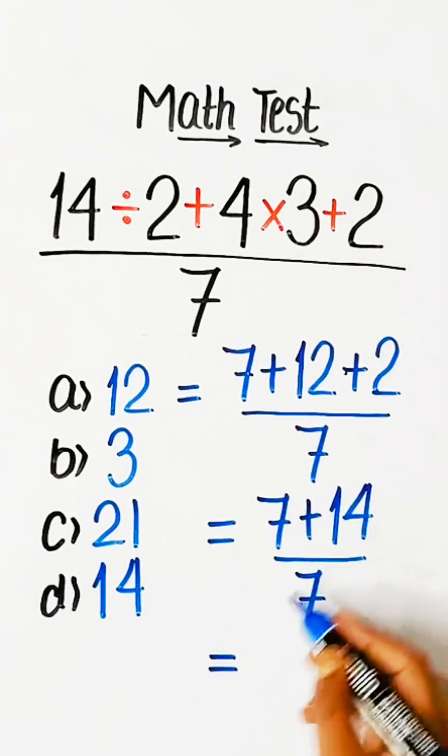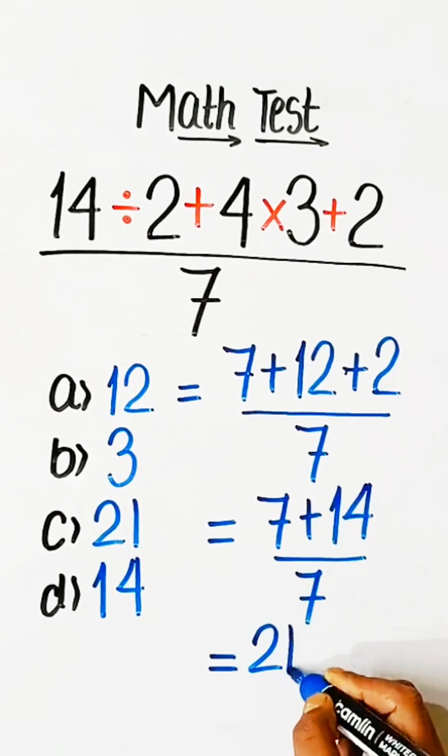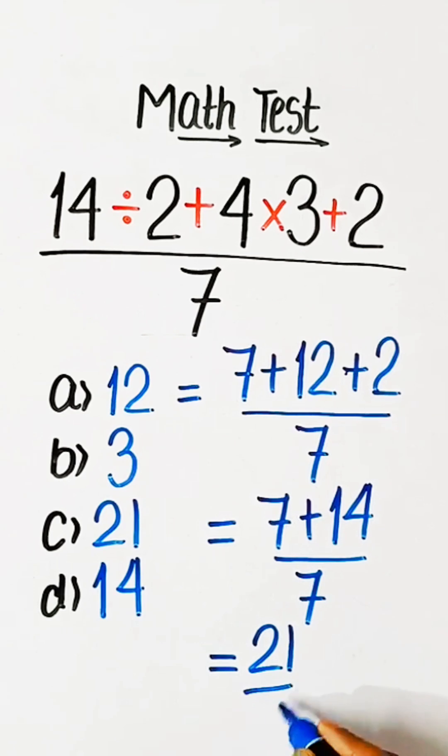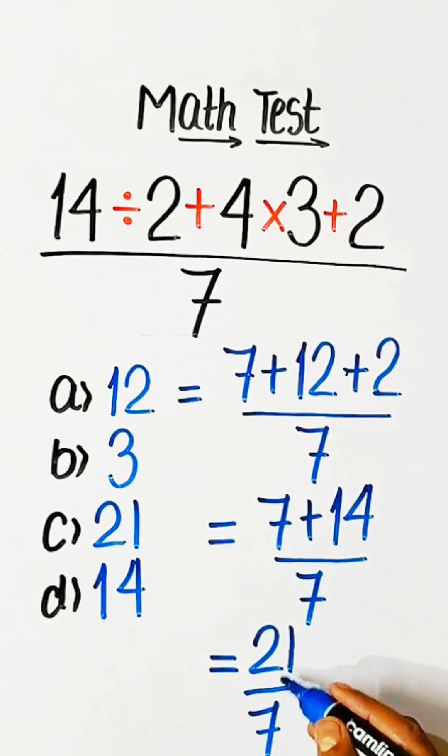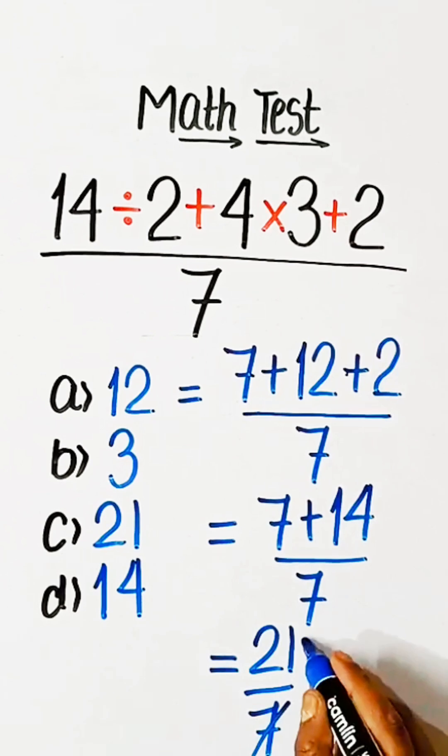So 7 plus 14 is 21 upon 7, and 21 divided by 7 equals 3.